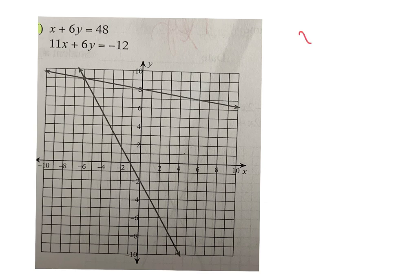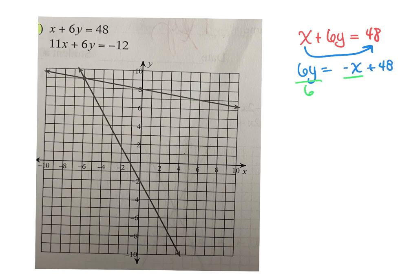This first one is x plus 6y equals 48. Move your x over — you have negative x plus 48. Divide by 6. You have y equals... what's your slope here? Negative 1/6 x. 48 divided by 6 is 8. So you'll see for this one, we start at the 8.